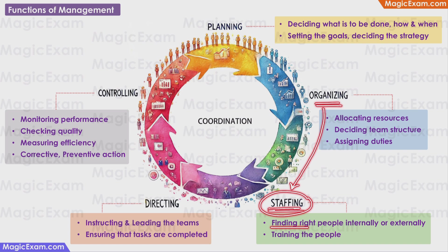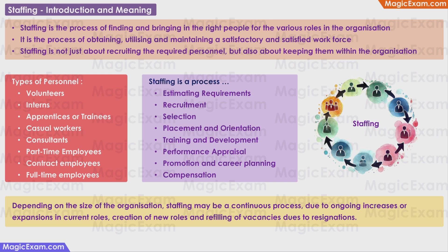Staffing simply means finding the right people, either internally or externally, for the roles or positions you have created, and also training them to do the jobs. The definition of staffing is: it is the process of finding and bringing in the right people for various roles in the organization — the process of obtaining, utilizing, and maintaining a satisfactory and satisfied workforce.